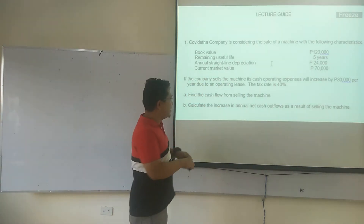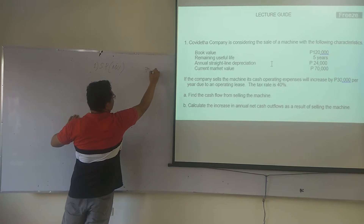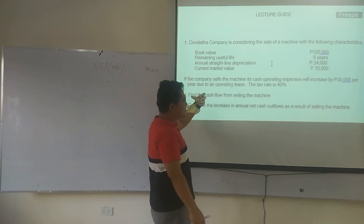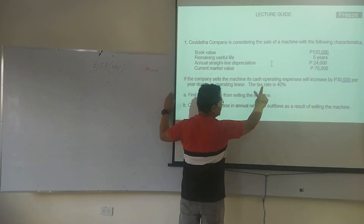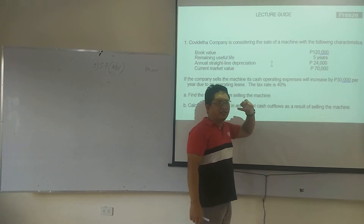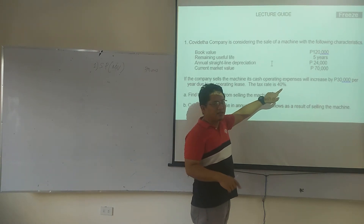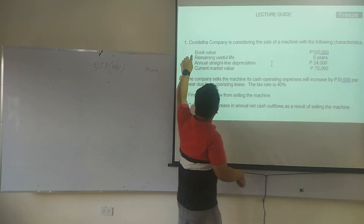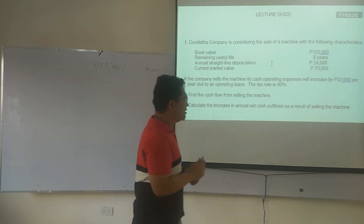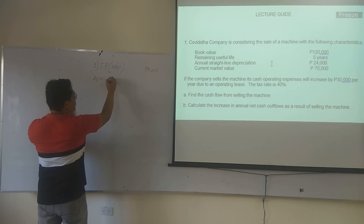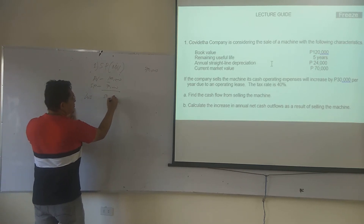Its market value, or selling price, is 70,000 pesos — that is the total inflow. We have to look at what else we are going to receive. The tax rate is 40%. The book value of the machine is 120,000. If we sell it at 70,000, we will be losing 50,000. So its book value is 120,000, its selling price is 70,000, and that means we incurred a loss of 50,000.